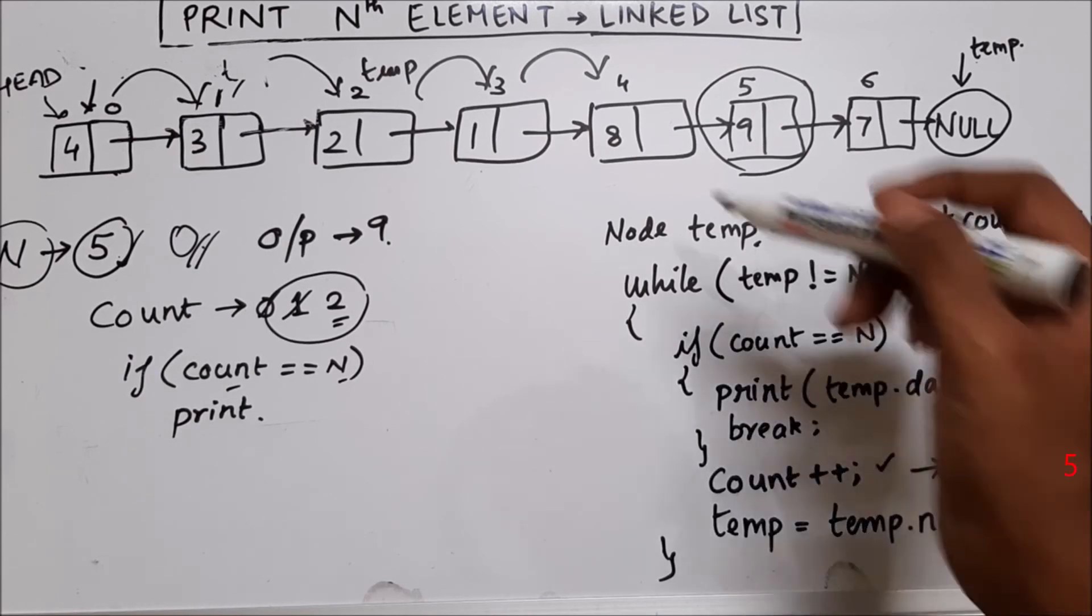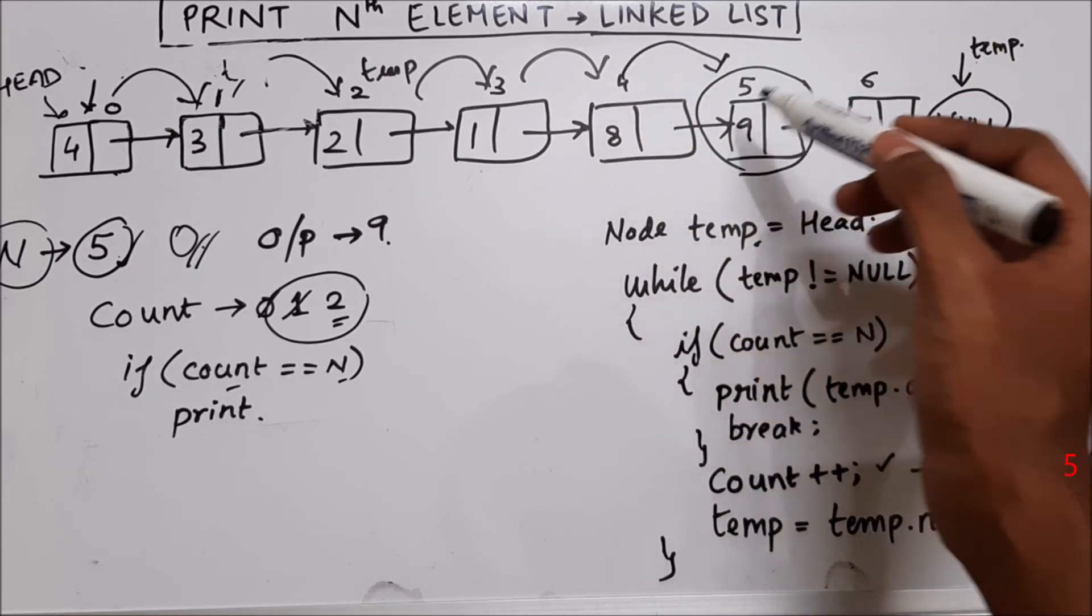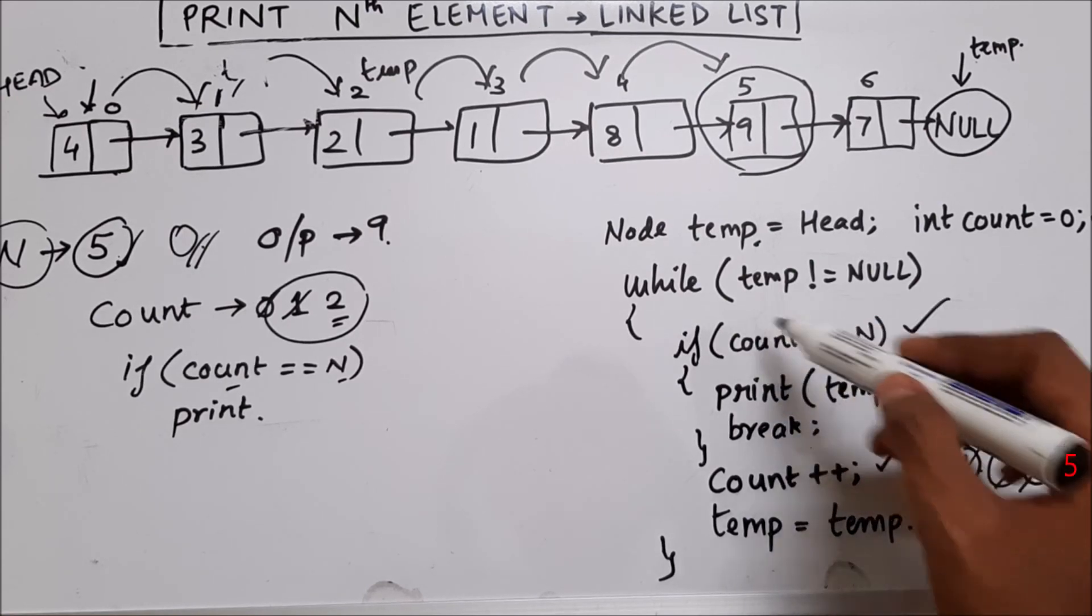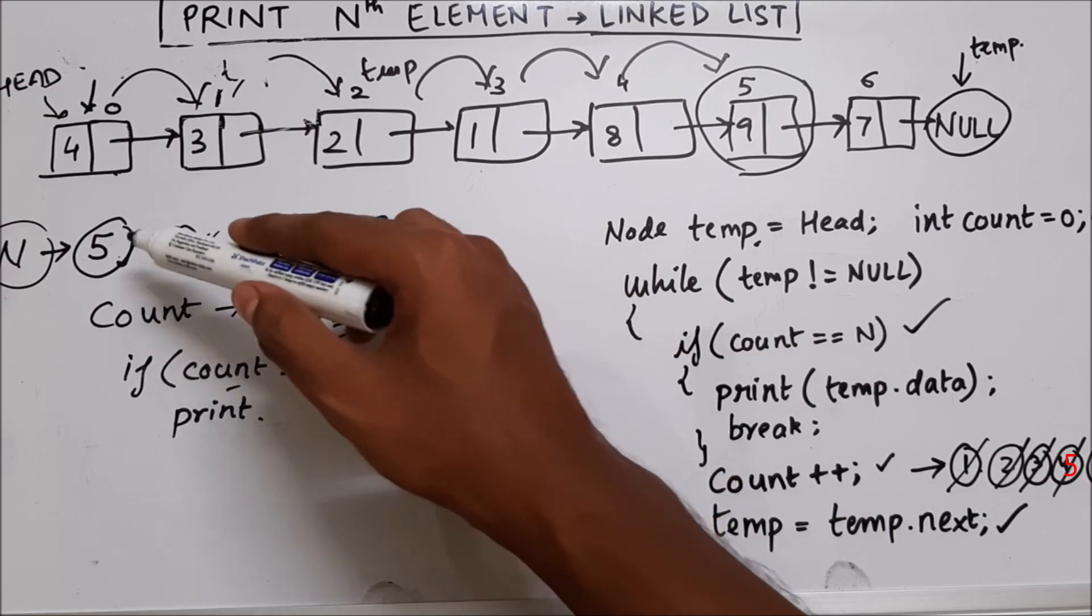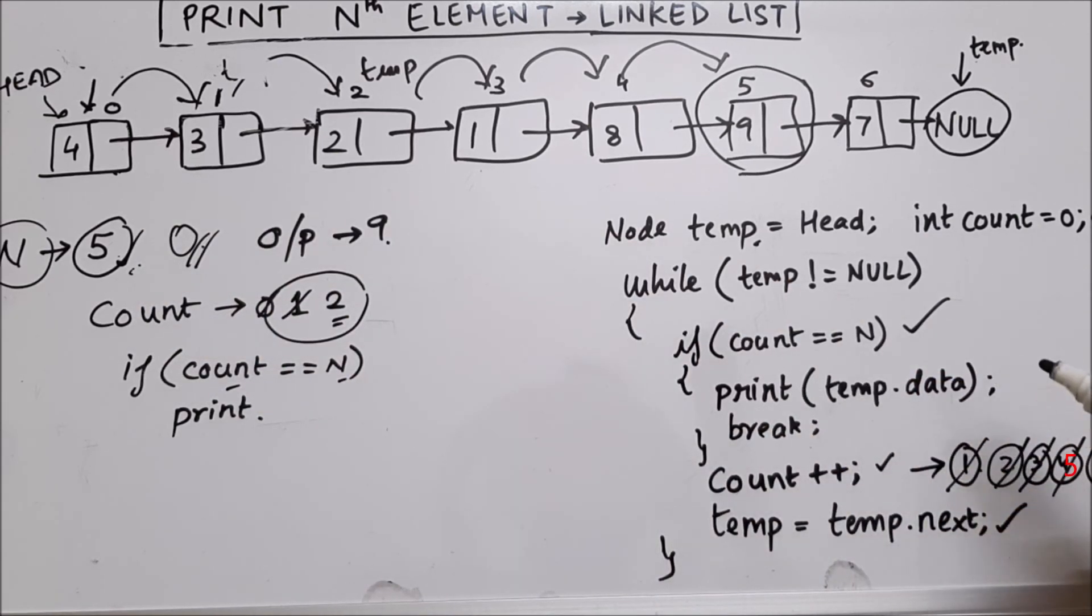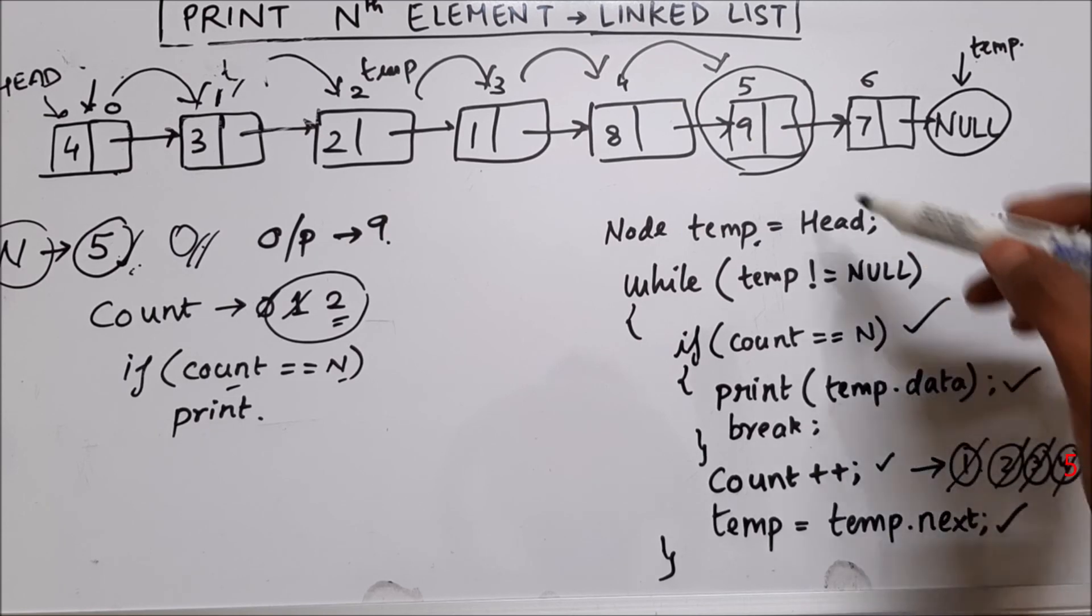when count becomes five and temp also points to this node and we will check count equal to n, yes, count is also five and n is also given as five. In that case, it will come inside the if, it will print the data, which is present at temp.